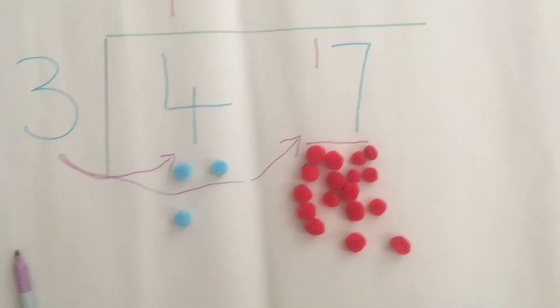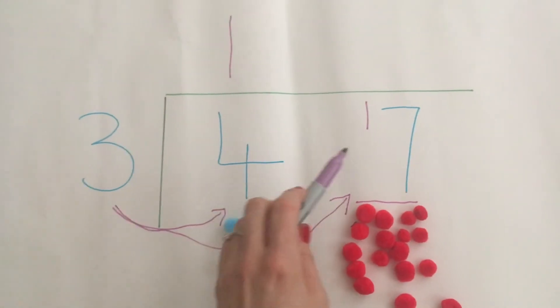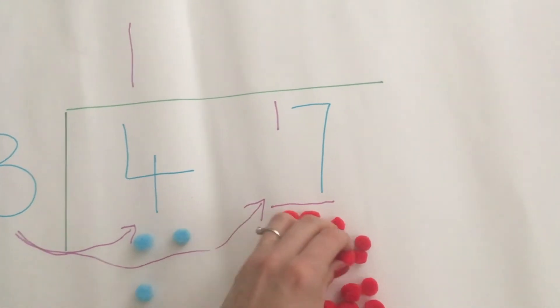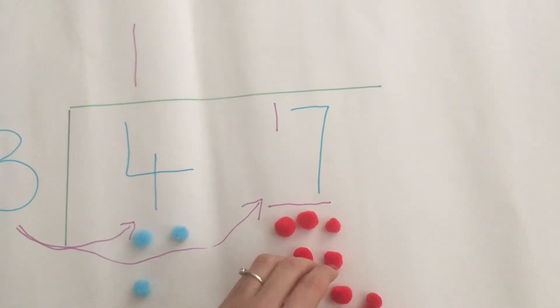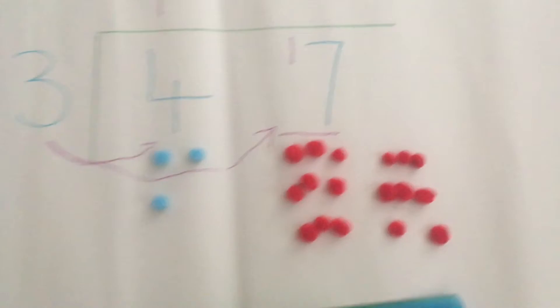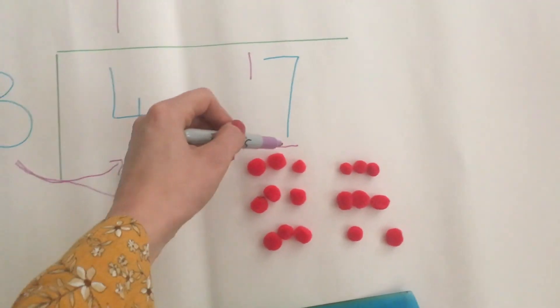I need to put them into groups of 3 because I want to find out how many 3's there are in the number 17. I've put them into groups of 3 and remember they all need to be even groups of 3.